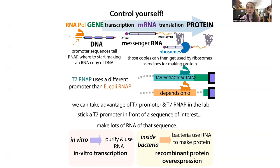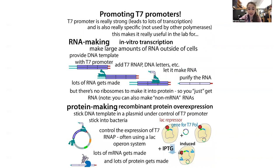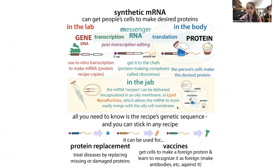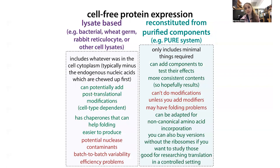How we use it can vary. We can take that messenger RNA and stick it inside of cells — this is the idea with messenger RNA vaccines, where the RNA is in vitro transcribed by T7 RNA polymerase. We can also do in vitro translation with in vitro transcribed messenger RNAs.